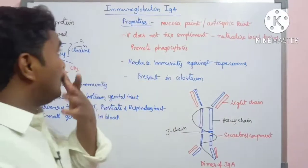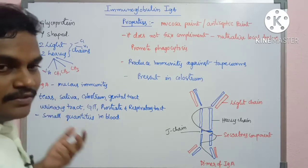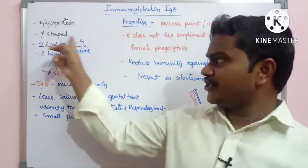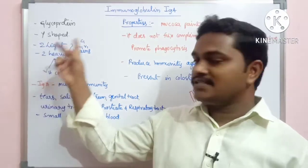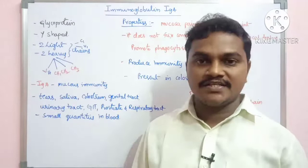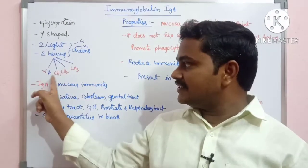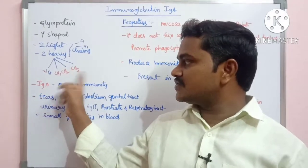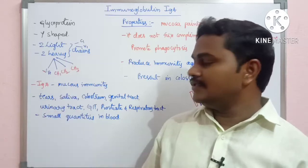Immunoglobulin A is actually a glycoprotein. Generally, the glycoprotein is Y-shaped with two light chains and two heavy chains. It contains two domains: C1 and V1 on the light chains, and four domains VH, CH1, CH2, CH3 on the heavy chains.